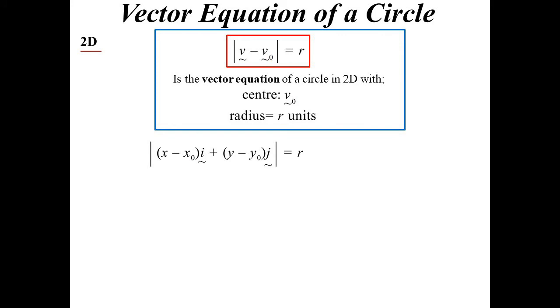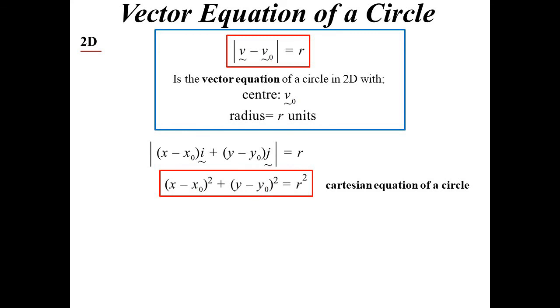Just to prove it, there it is, but I've broken up the vectors into components. So it would be X minus X_0 in the i direction, Y minus Y_0 in the j direction. The magnitude of that, well if I square both sides, so I get through to the square root sign on the left hand side, you'll see we get what we recognize to be the Cartesian equation of a circle.